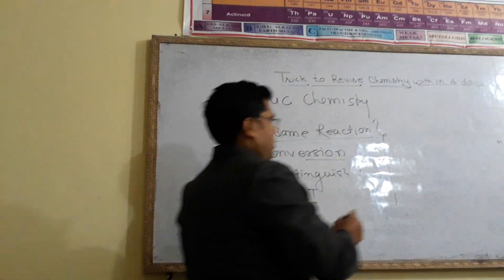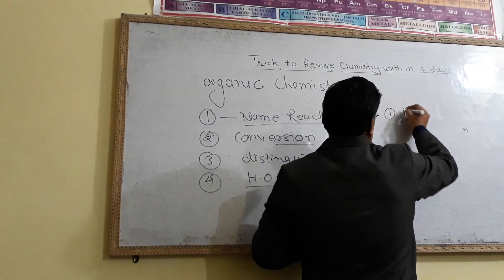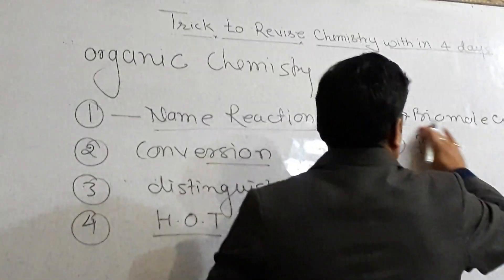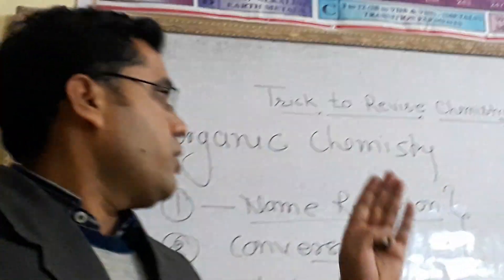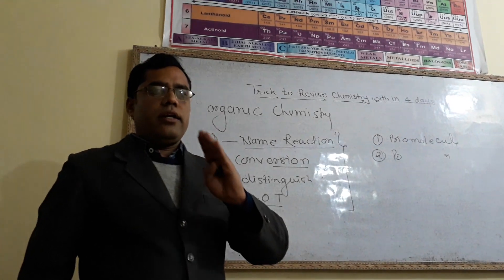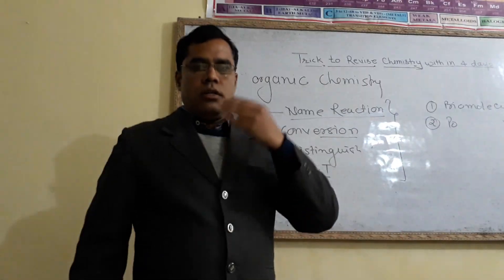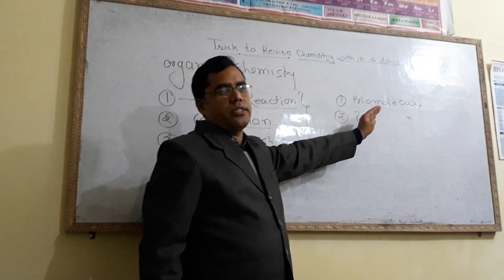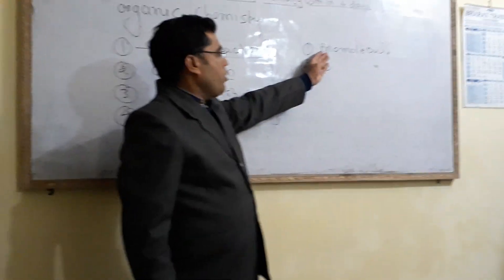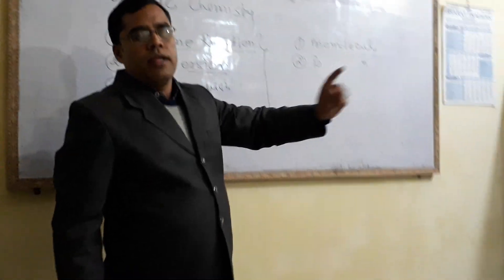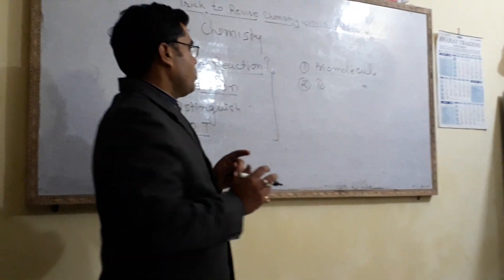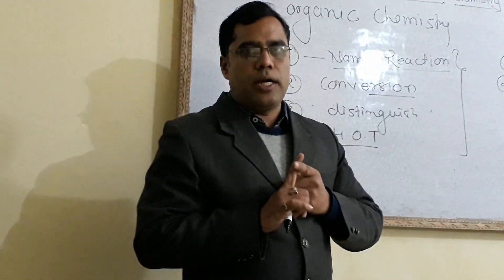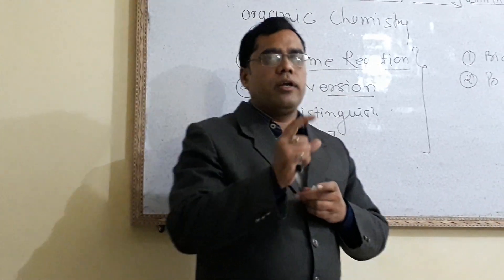The last three chapters are biomolecules, polymers, and chemistry in everyday life. From biomolecules, mainly questions come from glucose: the reaction of glucose with HI, reaction of glucose with concentrated acid, reaction of glucose with Na and C₂H₅OH, that is reduction and oxidation of glucose, and also the reaction of glucose with hydrogen and phenyl hydrazine. Also learn the structure of glucose like alpha-D glucose and beta-D glucose, the structure of sucrose, structure of amylopectin, and structure of amylose. Zwitterion is again a very important topic from amino acids.